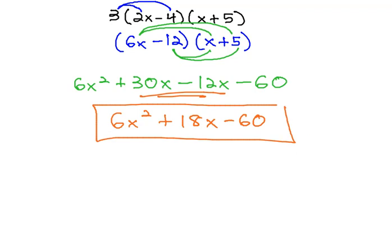This second method to arrive at the same correct answer is found by first distributing the number into just the first set of parentheses, and then multiplying out the resulting binomials. Both ways work just fine on any problem.